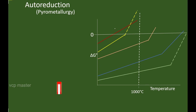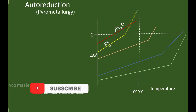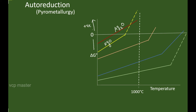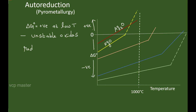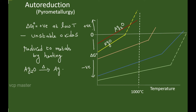Silver oxide and mercury oxide cross the zero line of the Ellingham diagram well below 1000°C, which means they have positive standard Gibbs free energy change at low temperatures. So these two oxides are considered unstable and can be reduced by mere heating. When silver oxide is heated, it decomposes to metallic silver, and mercury oxide forms mercury.